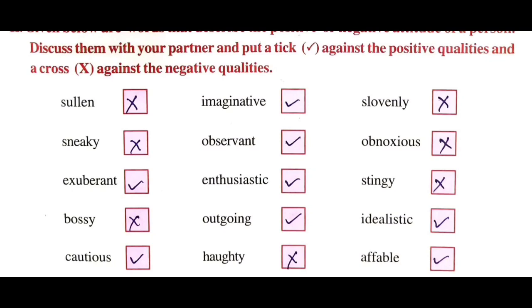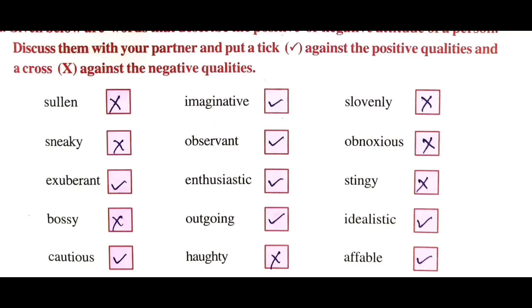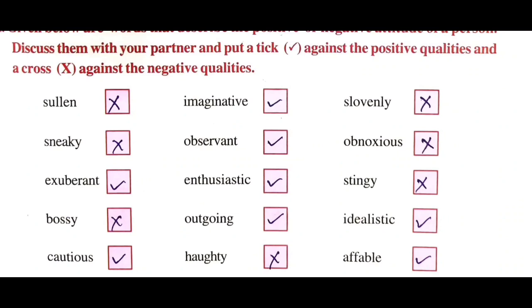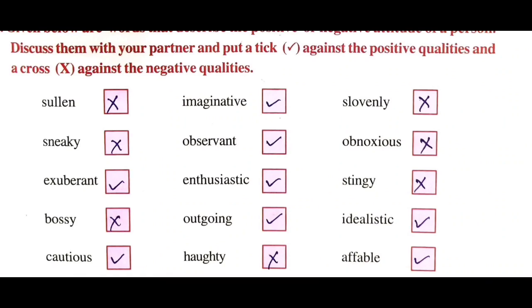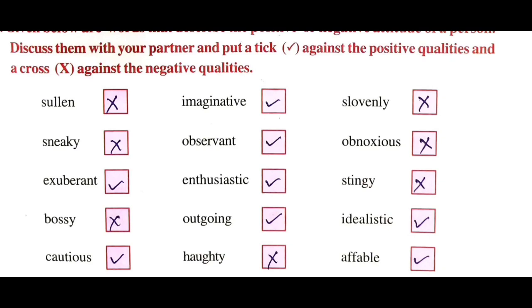Next: 'slovenly' means untidy and dirty - this is a bad quality, put the cross mark. Next: 'sneaky' means dishonest, being unreliable - this is a negative quality, put the cross mark. Next: 'observant' means having observation skills - this is a good quality, put the tick mark. Next: 'obnoxious' means unpleasant and dirty - this is a negative quality, put the cross mark. Next: 'exuberant' means happiness - this is a positive quality, give the tick mark. Next: 'enthusiastic' means having enthusiasm - a positive quality, give the tick mark.